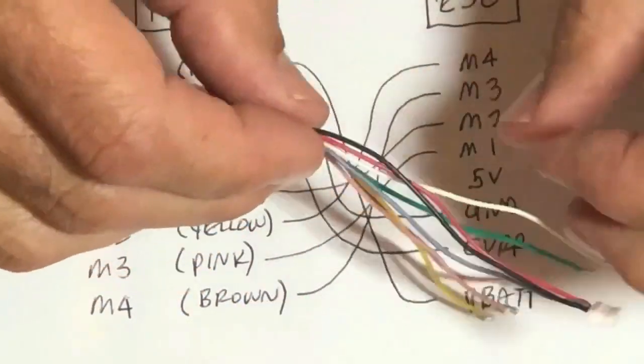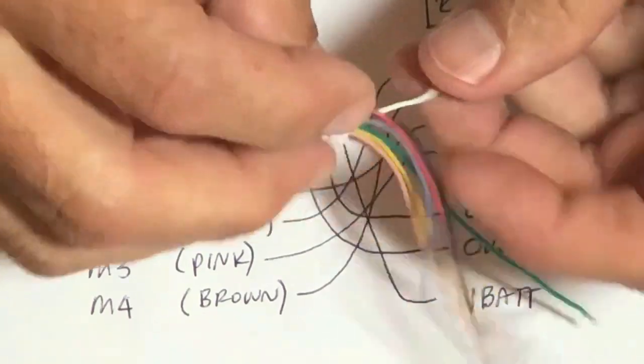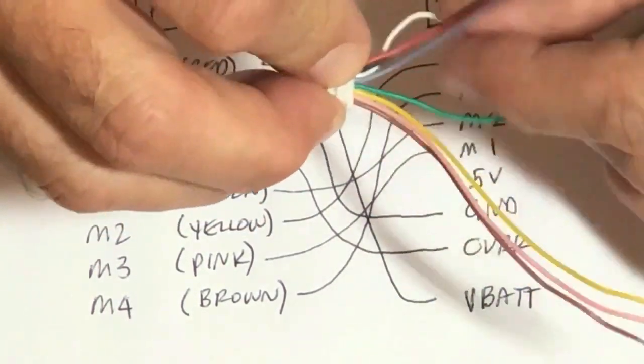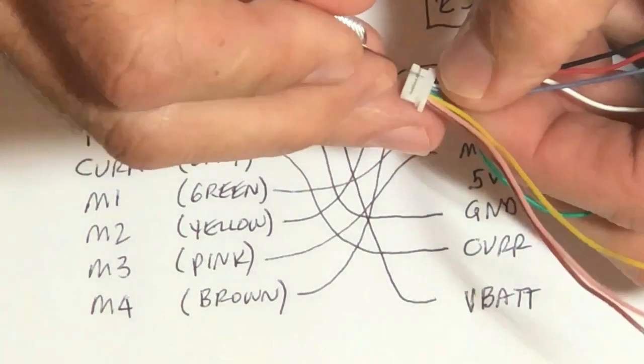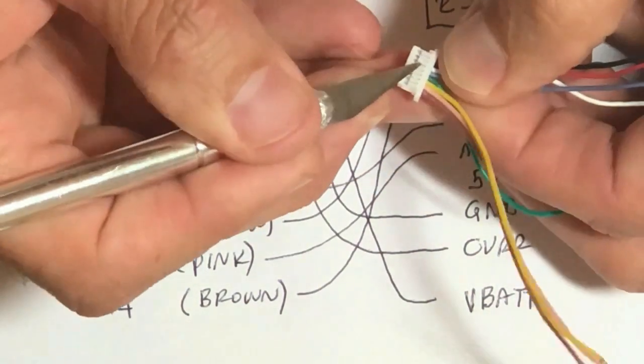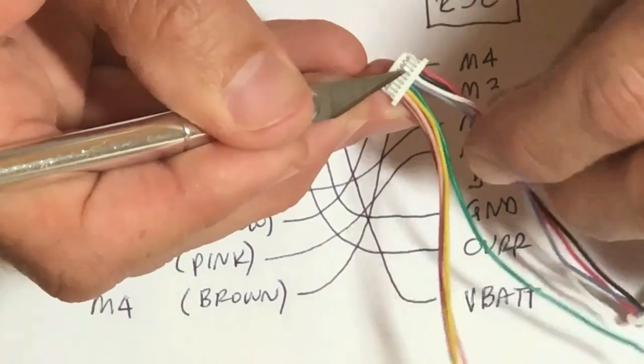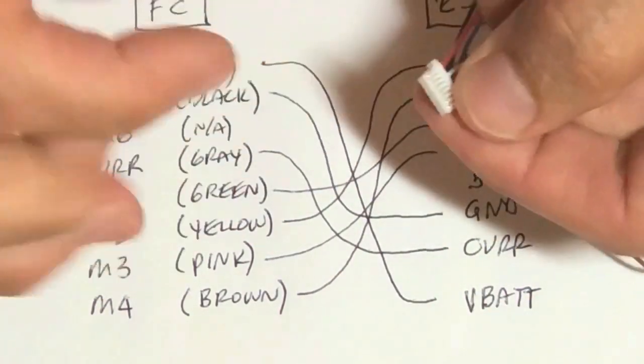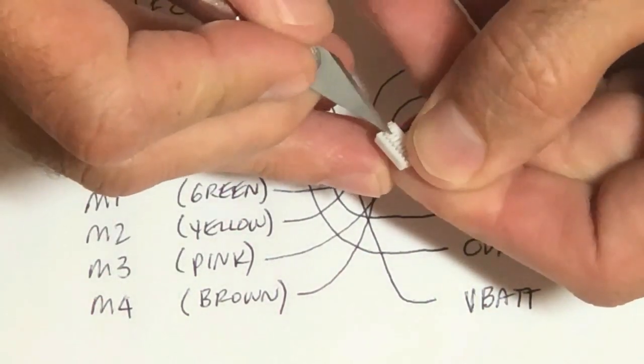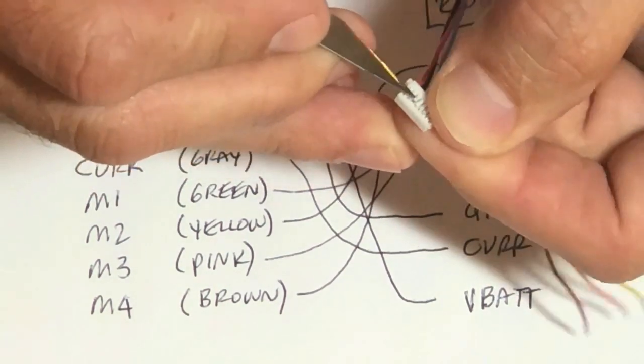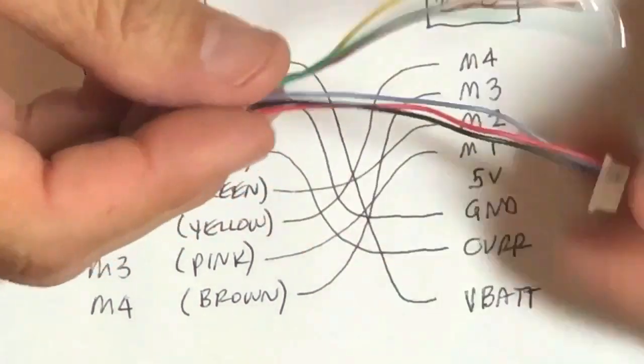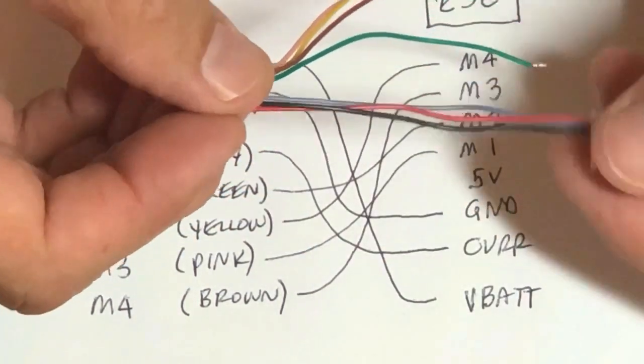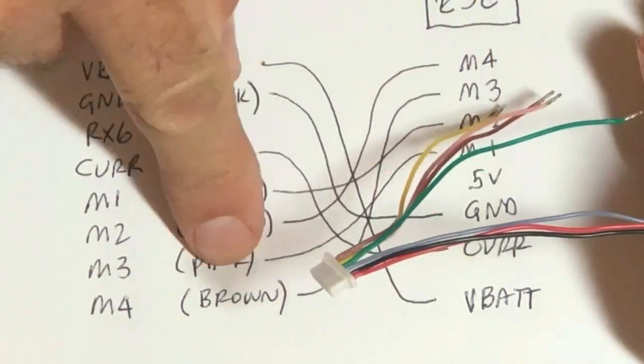My next pin isn't going to be used. In fact, that's this white wire. I'm not going to use it at all, so I'm going to go ahead and pull it out. Next pin is motor one, which is going to be pink.